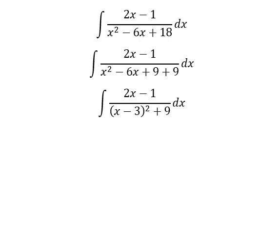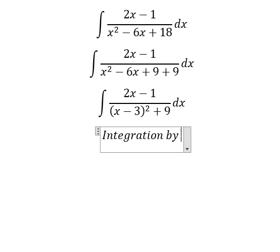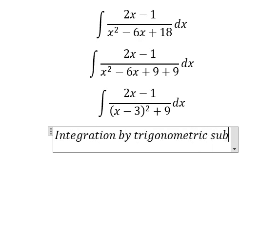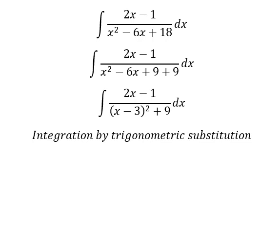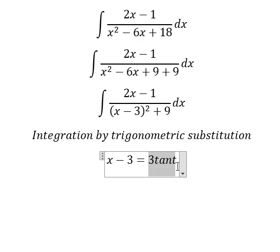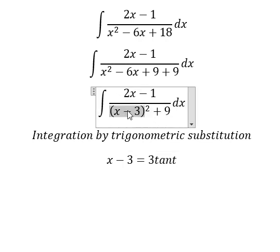Next we can use integration by trigonometric substitution. I will put x minus 3 equals to 3t, because if I put this in, you get 9t² plus 9. We can do factorization: 9 times (t² plus 1), and we change for secant of t squared. Later that will simplify by dx.